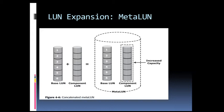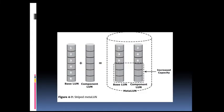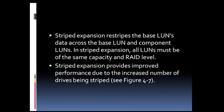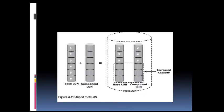Coming to striped expansion, this re-stripes the base LUN's data across both the base LUN and the component LUN. In striped expansion, all LUNs must be of the same capacity and the same RAID level. Striped expansion provides improved performance due to the increased number of drives being striped, as data gets distributed across all existing drives.